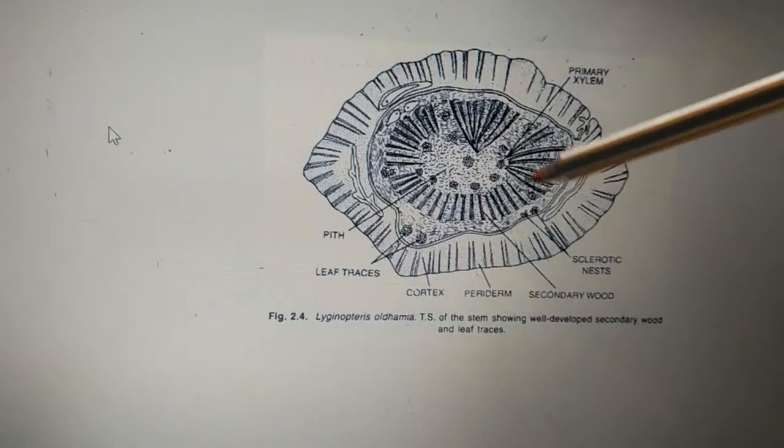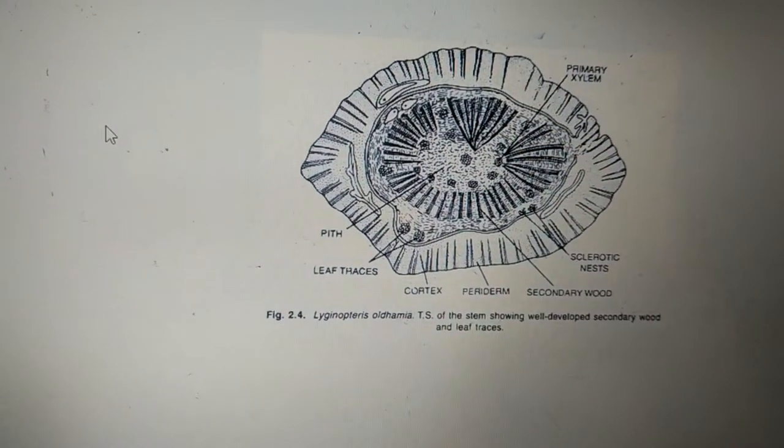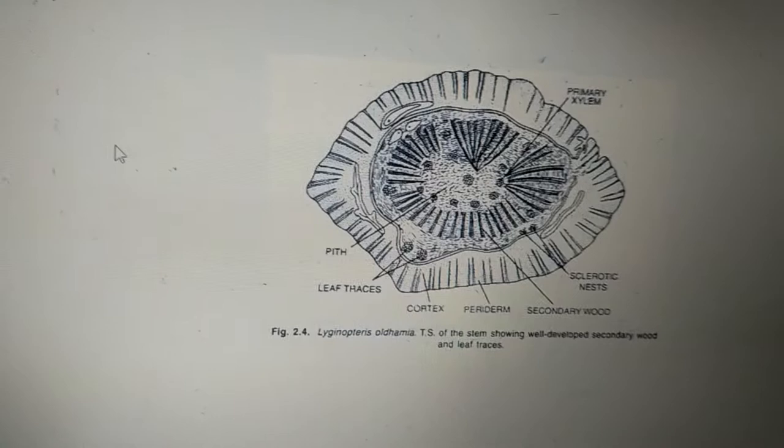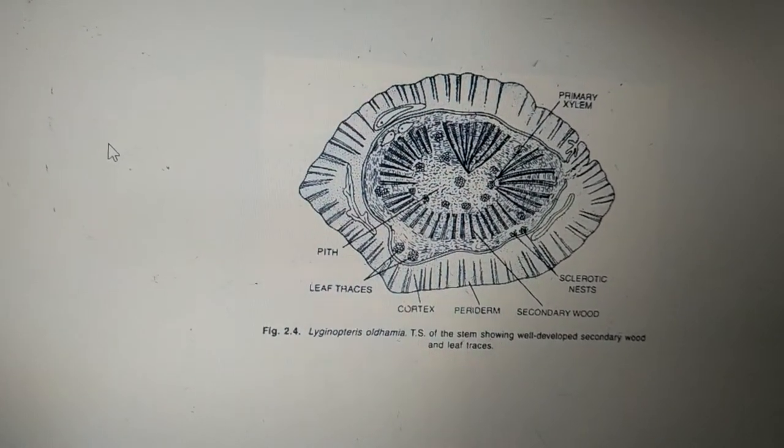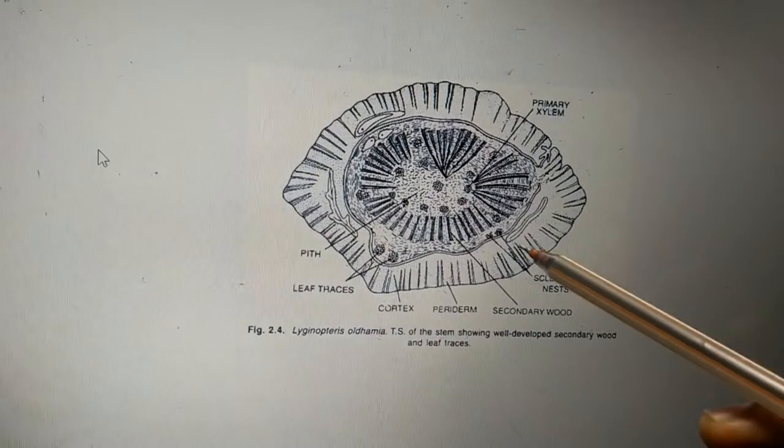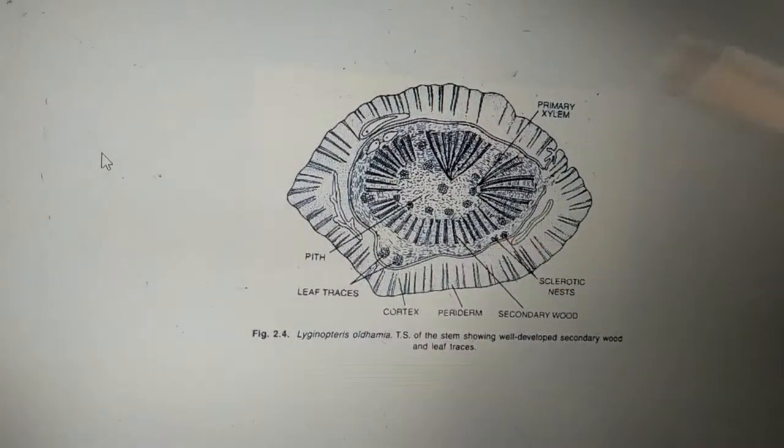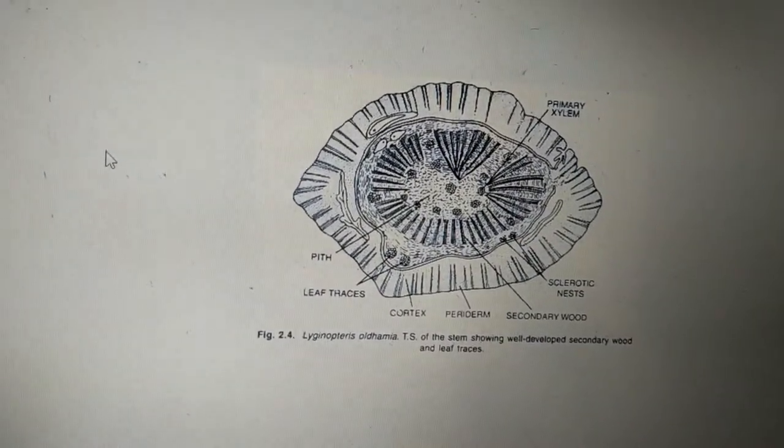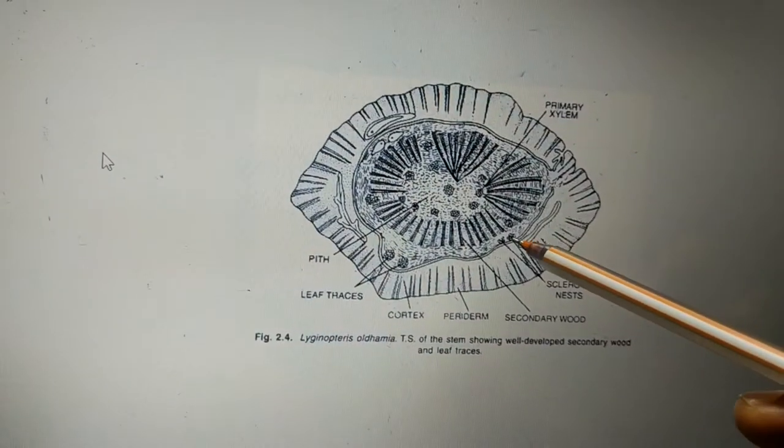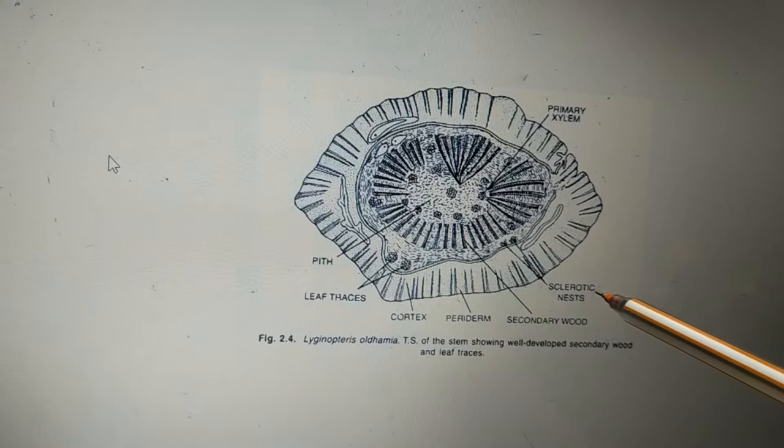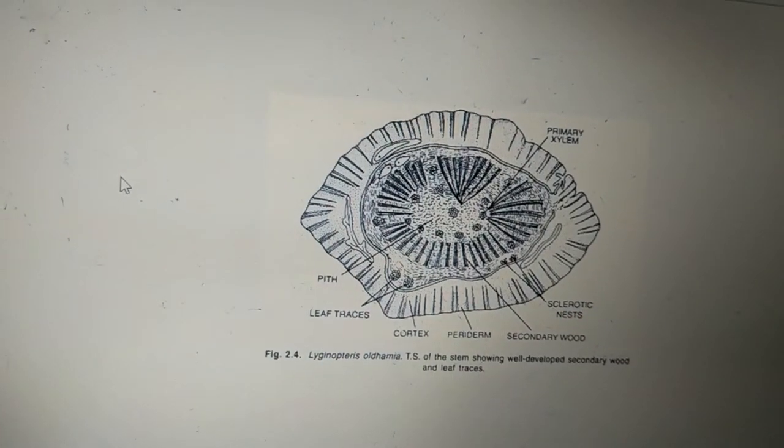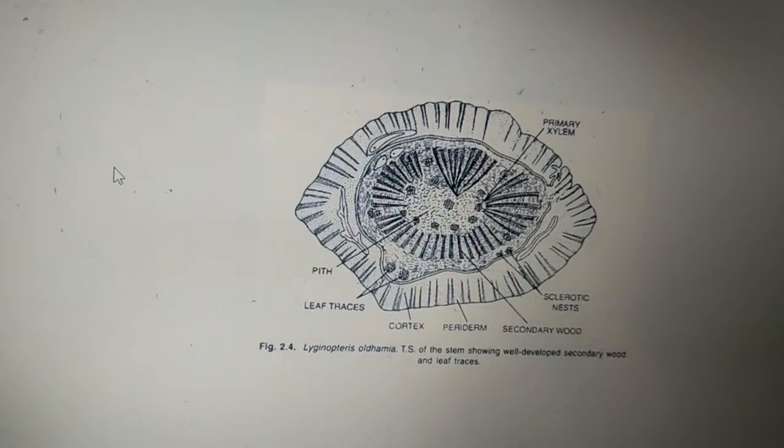Apart from that, we have a pith, so central pith. This is large and it is made up of parenchymatous cells, and it possesses frequent clusters of small sclerotic cells. They are usually referred to as sclerotic nests.